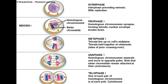Then we go into metaphase 1, where the pairs of homologs are lined up around the equator of the cell. In anaphase 1, the entire double-stranded homologs are separated from each other. Then we go into telophase 1 — the homologs have reached opposite ends of the cell, they may start to uncoil back towards chromatin, there may be partial development of a new nucleus, and cytokinesis occurs.